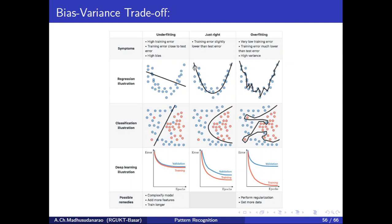In the just-right fit case, training error and test error are almost nearby each other. The error you are going to get is not so high - it's somewhat reasonable, a bit low. You can see it's somewhat low - training error and test error are both low.